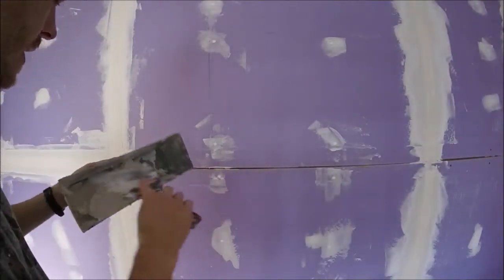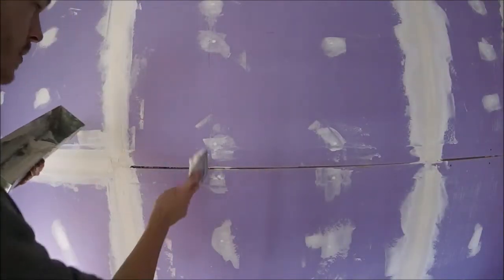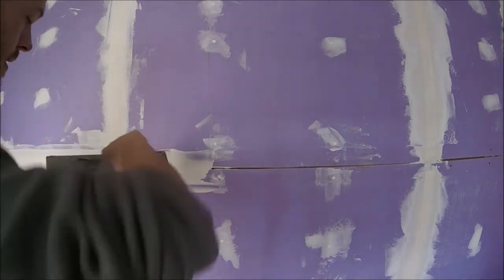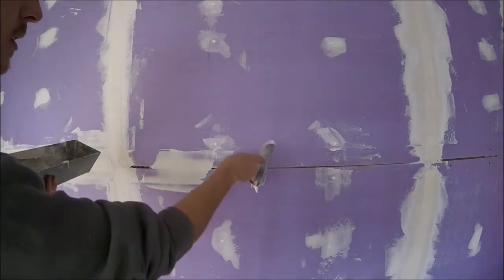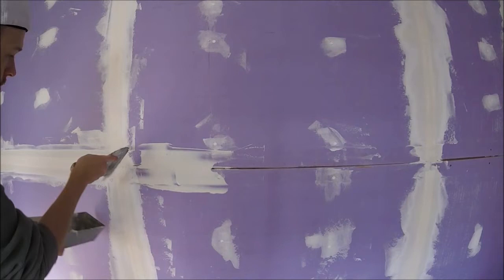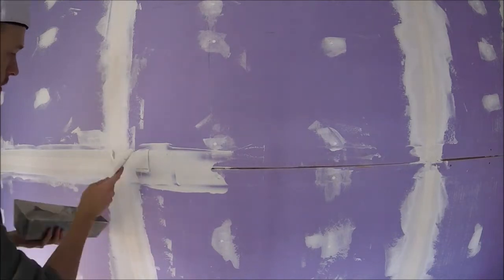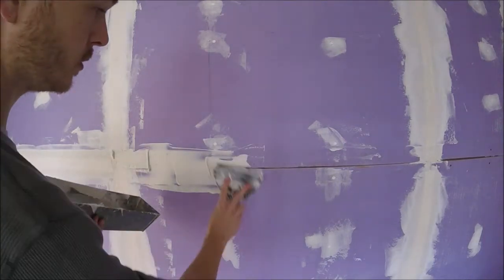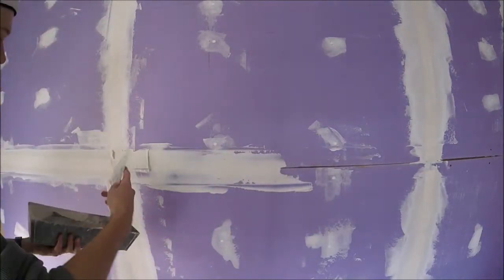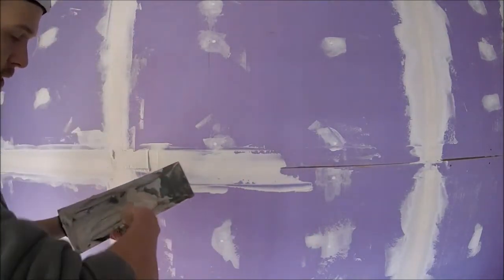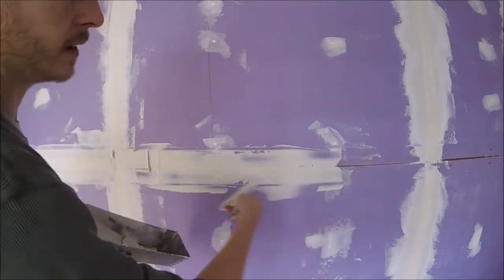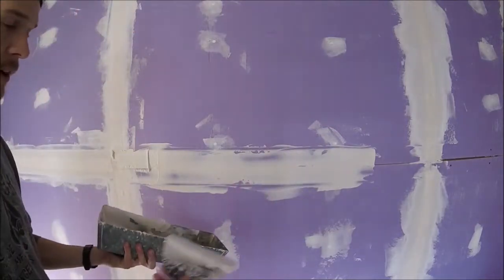So now we're going to mud the seam. We're just going to do that by getting our 6 inch knife. We're just going to run it, you can run it up and down or side to side. We're just going to fill in the seam and give a nice bed of mud for our tape.